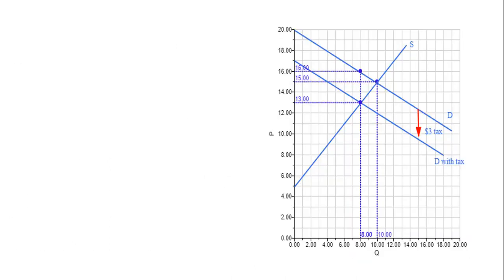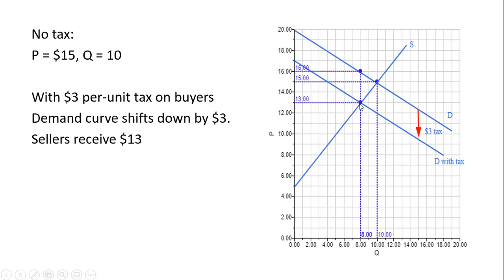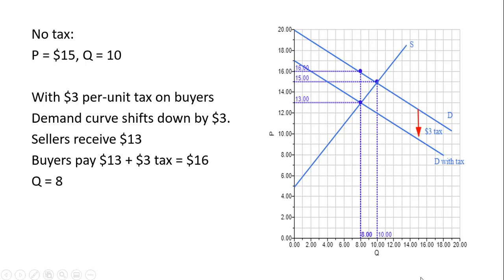In terms of graphing this: without the tax, the equilibrium price is $15 where the demand curve intersects the supply curve, and the equilibrium quantity is 10. With a $3 per unit tax on buyers, the demand curve shifts down by the amount of the tax. Sellers receive $13; buyers pay sellers $13 plus the $3 tax to the government, leaving buyers paying $16 per unit. The equilibrium quantity is now 8.